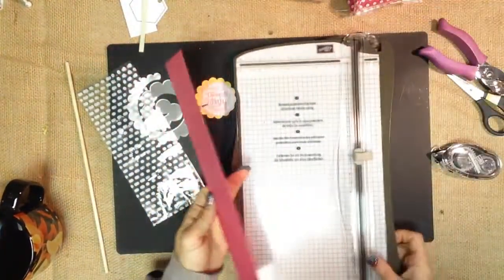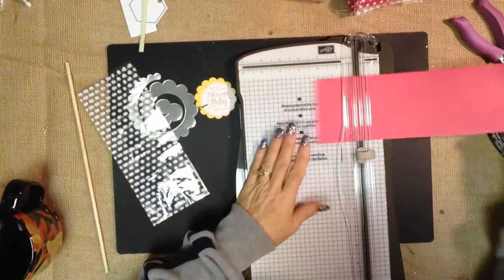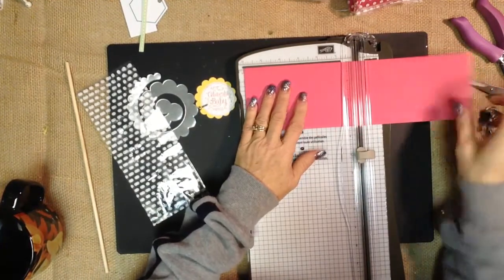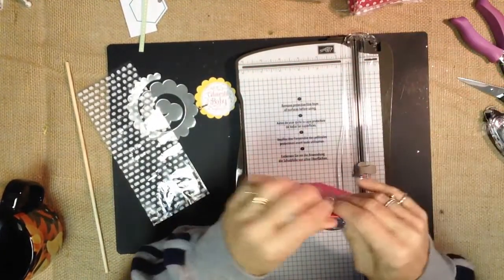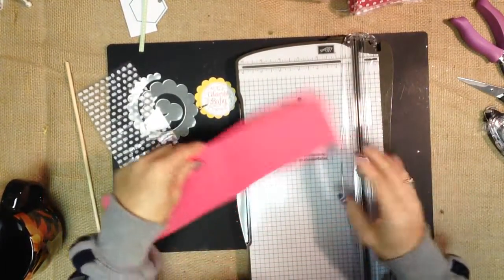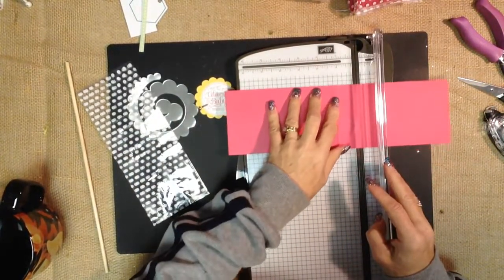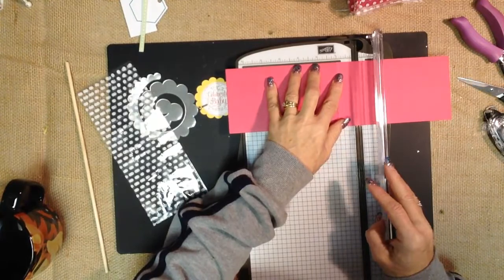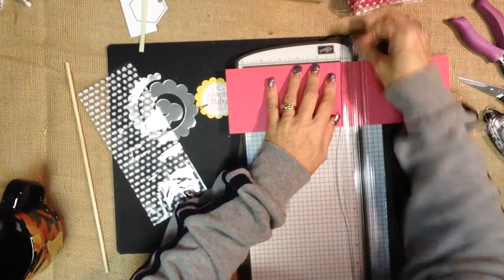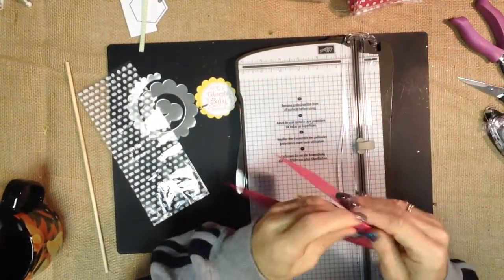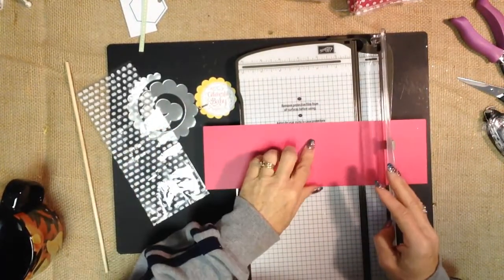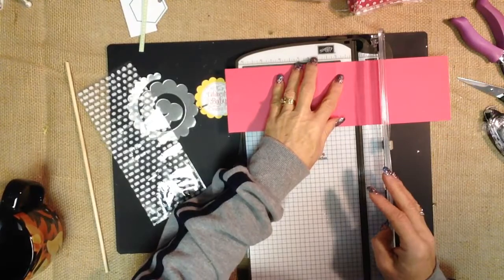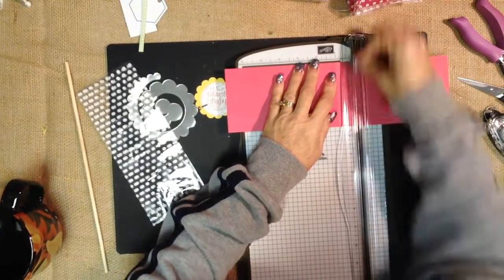We're going to want our scoring tool. We'll lay this in at 6 inches because we want to score it in half first. And we'll just get a good fold on that. And then we want to take that crease that we just made and put it on the 1 inch mark. And we're going to want to score. I always go over it a few times because I want a nice crease on it. And then we're going to flip it around, and we're going to put our center mark back on the 1 inch again.